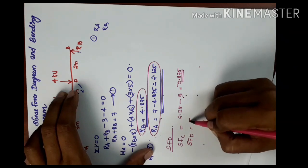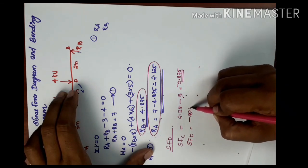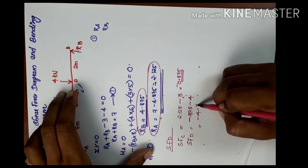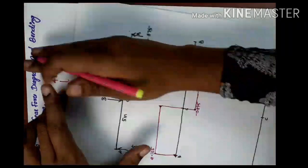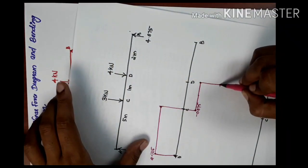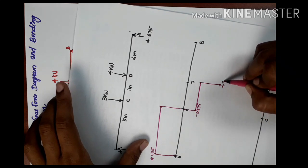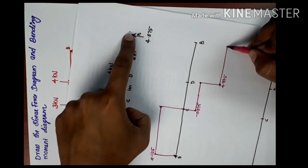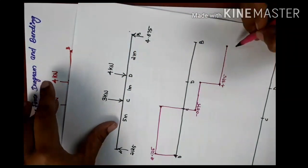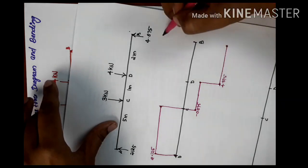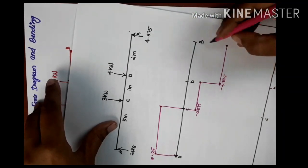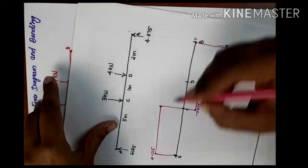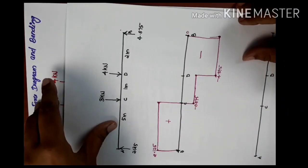So we already know that minus 0.875 — that is a minus value. Then from C to D the shear force remains at minus 0.875. Moving toward B, the next value is minus 4.875. At point B, we add the reaction plus 4.875, so minus 4.875 plus 4.875 equals zero. This completes the shear force diagram.